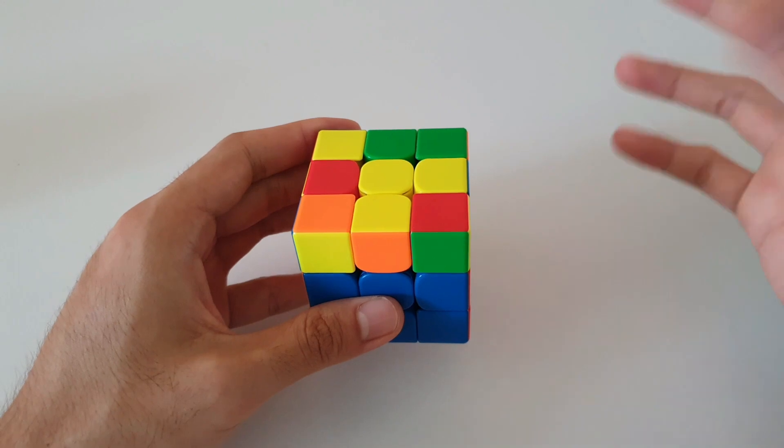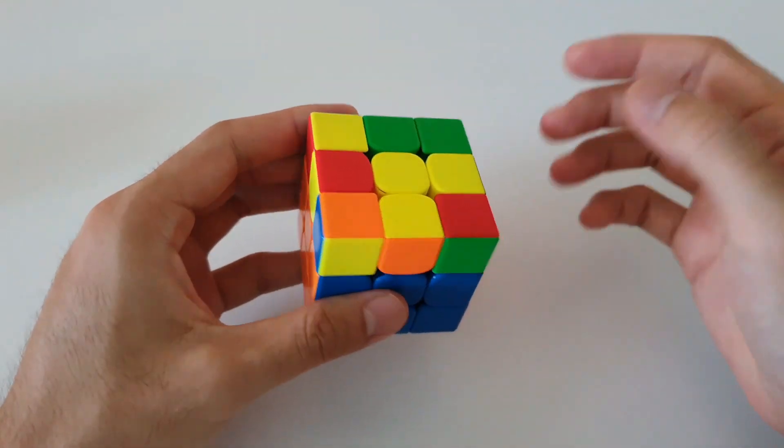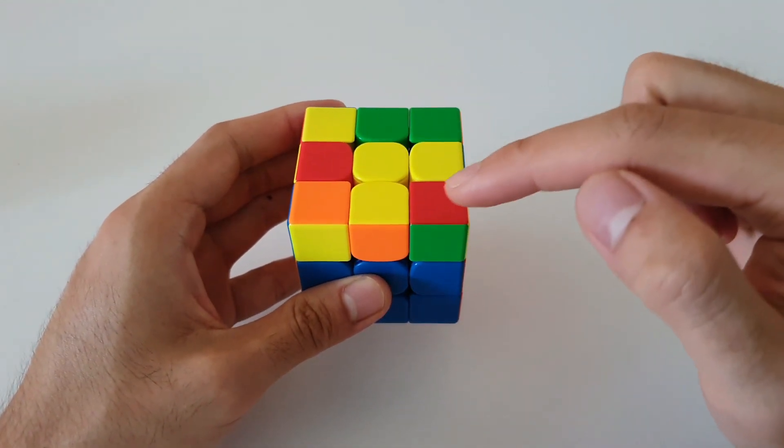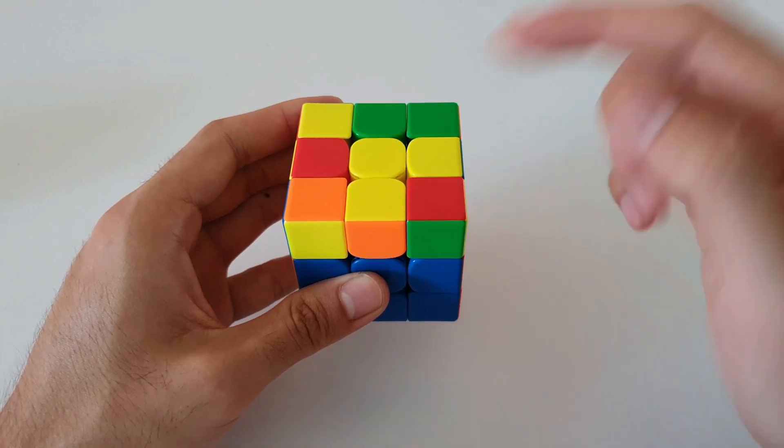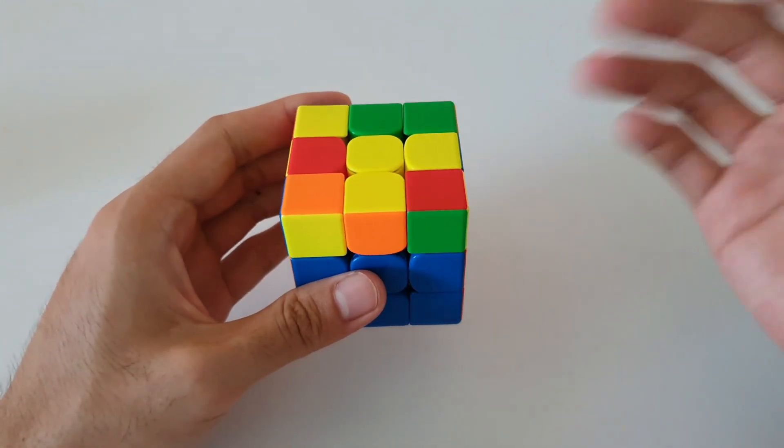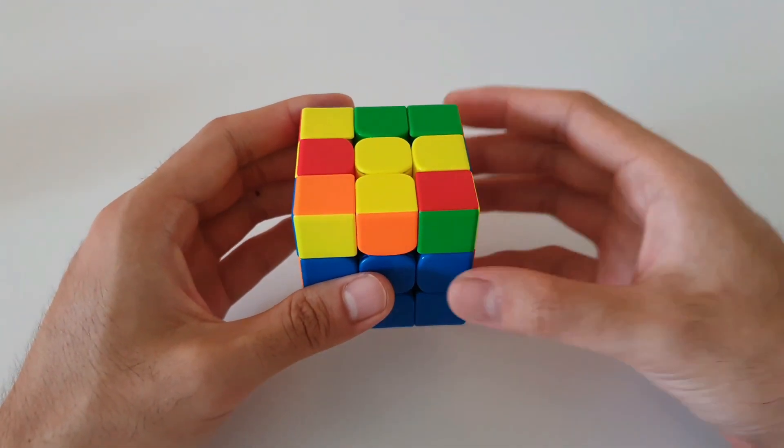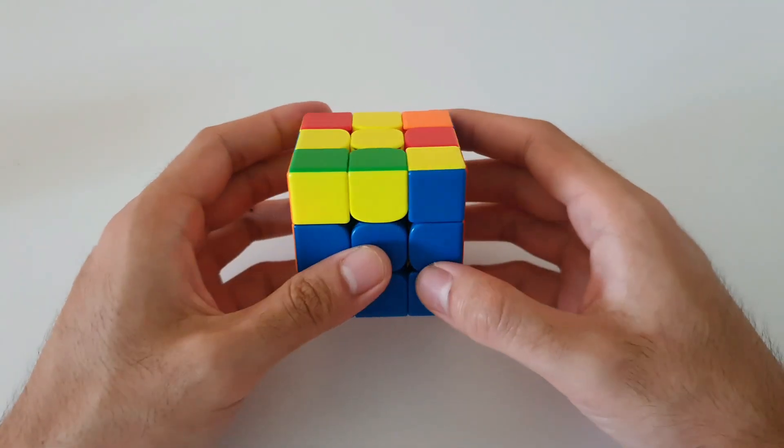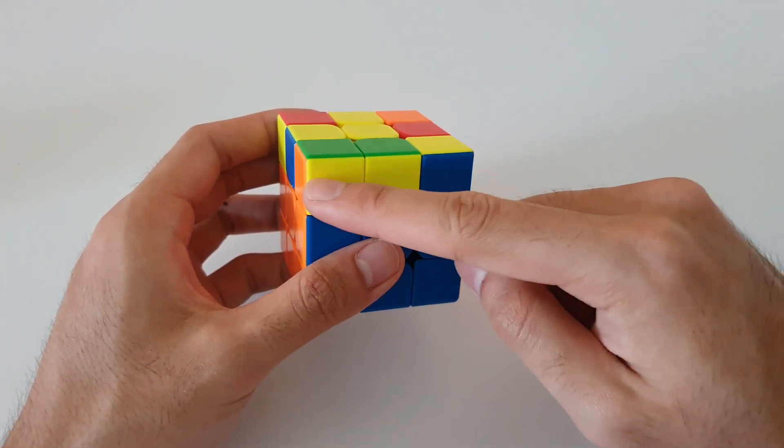so moving on to the next fish shaped case. For this one, once again, it's got the case where the single corner here is not oriented. So it is actually the mirror image of the previous case. So once again, you want to look on the sides for the 2x1 bar.